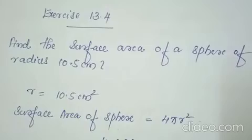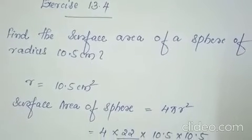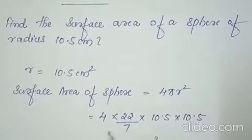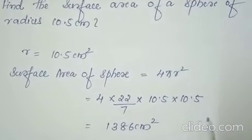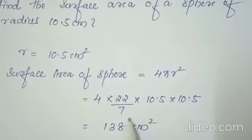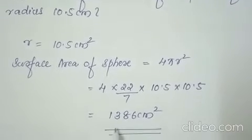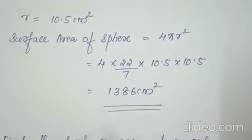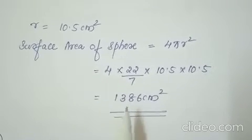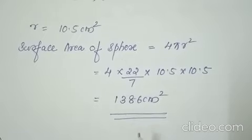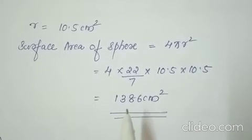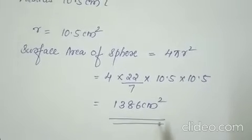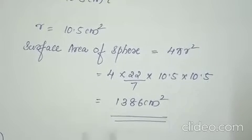4 into pi value 22 by 7 into r is 10.5 into 10.5. While multiplying all these numbers, you will get the answer 1386 cm square. In this way, we should do questions 1.1, 1.2, and 1.3. All these things apply the same formula — they will give the radius, and you have to find the surface area of a sphere.